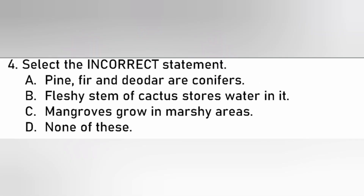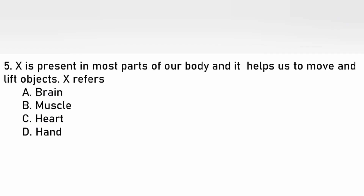Select the incorrect statement. A. Pine, Phil and D. Earth are conifers. B. Flashes steam — the cactus stores water in it. C. Mangroves grow in the marshy area. D. None of these. The answer is D. None of these.